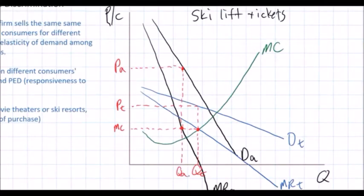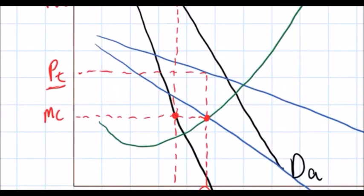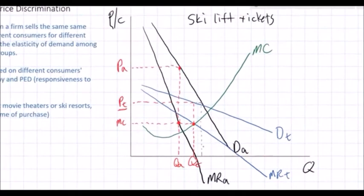The quantity sold to adults will be at QA. Instead of charging a single price of PT, the resort charges adults a higher price PA. At PT the number of tickets sold to adults would have been higher, but since demand is so inelastic the revenues from adults would have been lower. The idea is that the resort earns more revenues and profits by selling fewer lift tickets at a much higher price to adults, while teenagers pay the lower price PT.